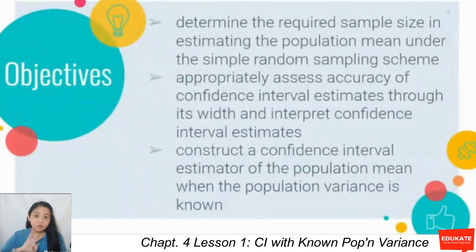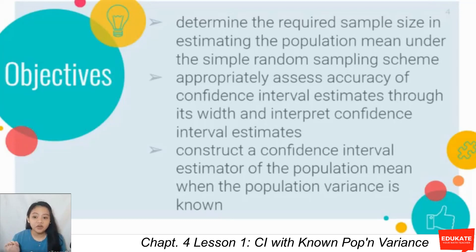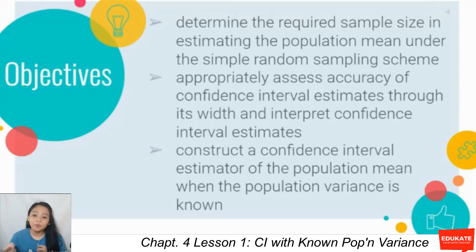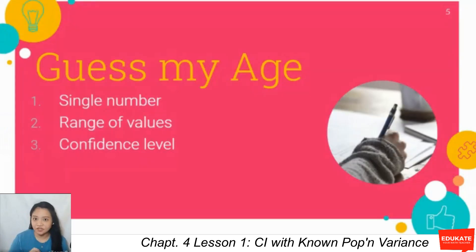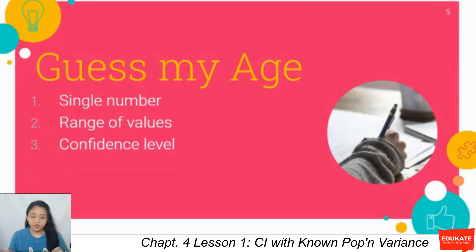We also have 3 sub-objectives: to determine the required sample size, assess accuracy of confidence interval estimates, and to construct a confidence interval estimator of the population mean when the population variance is known. Before going into the lesson, on your modules, there is an activity called Guess My Age or Guess Your Teacher's Age. You can pause the video here and do the activity first before moving on to our lesson.